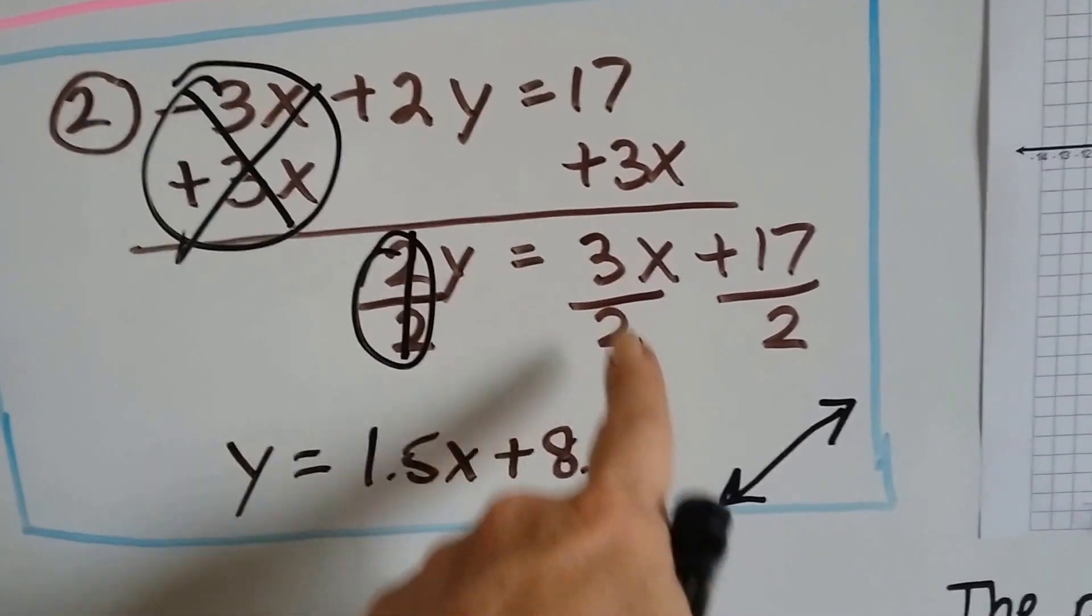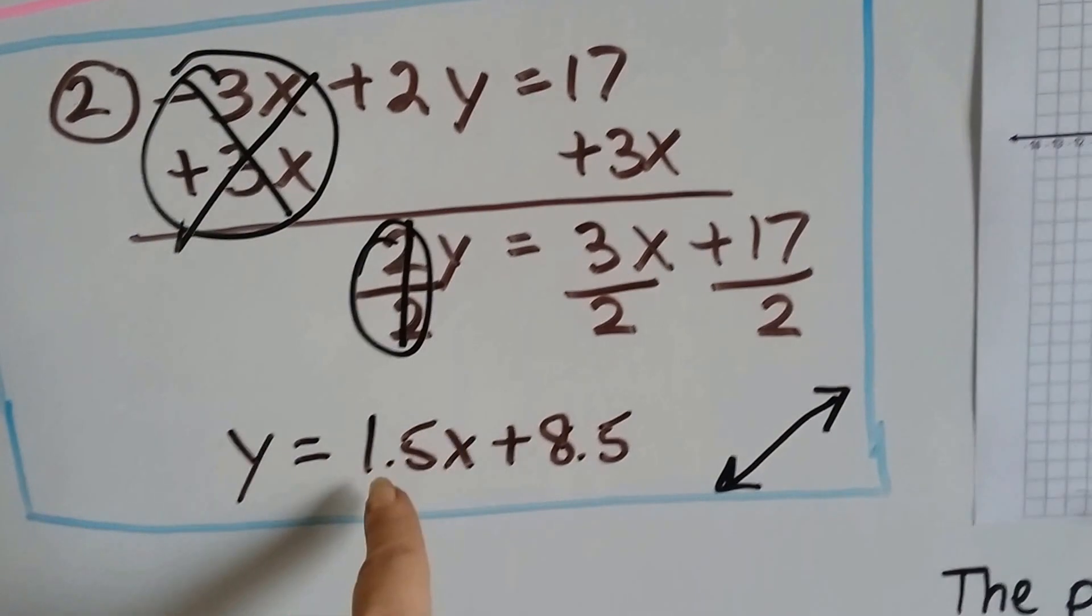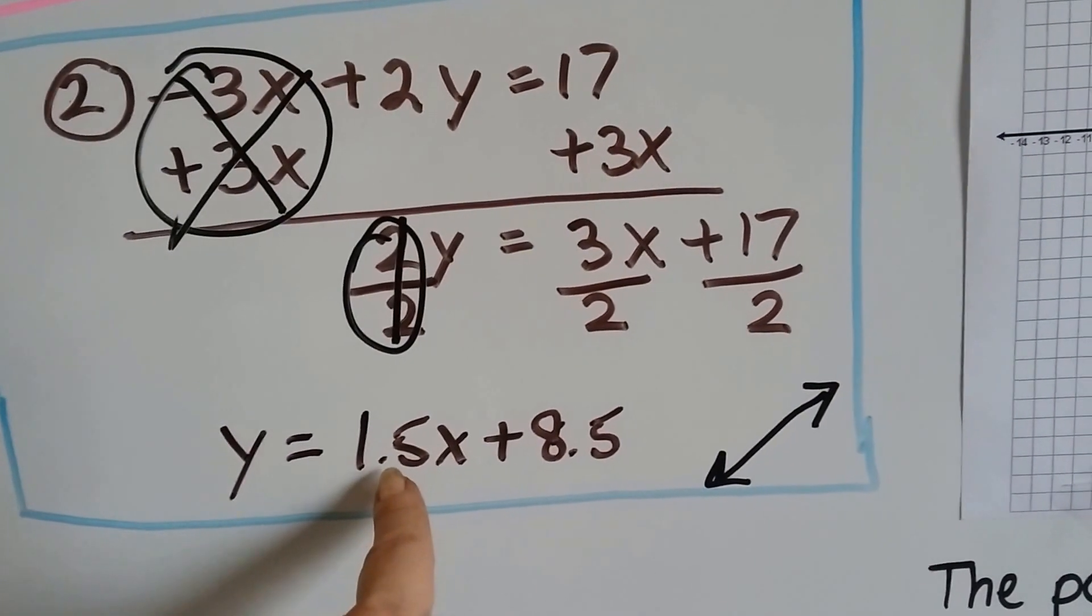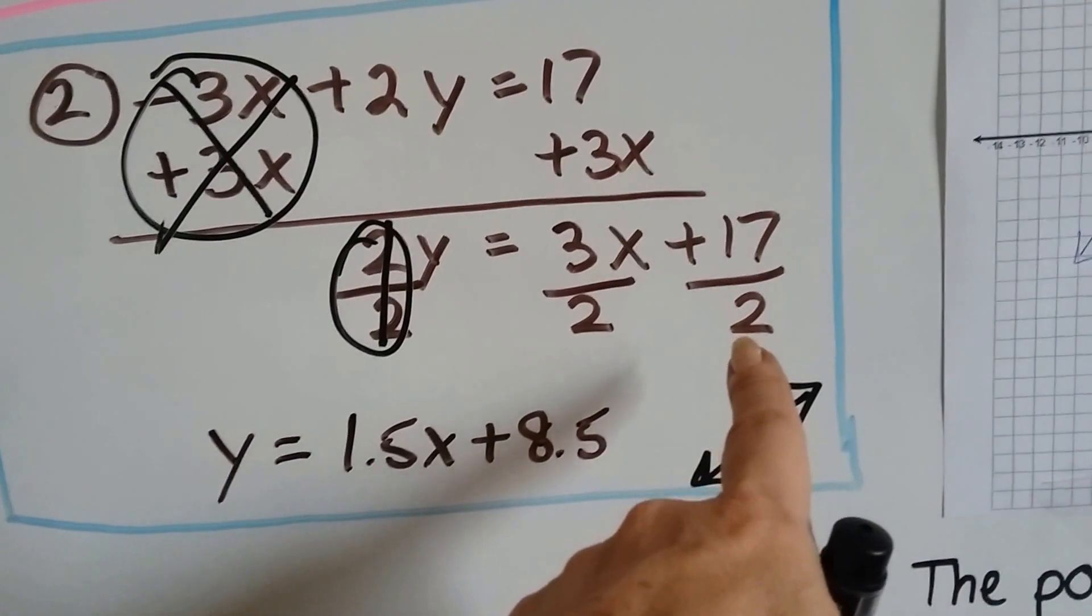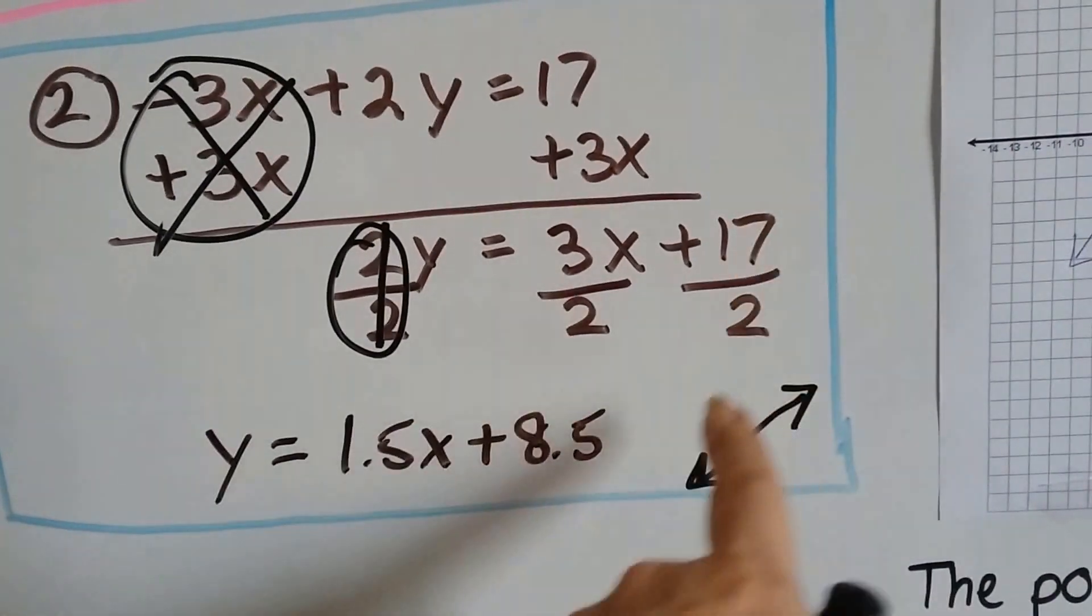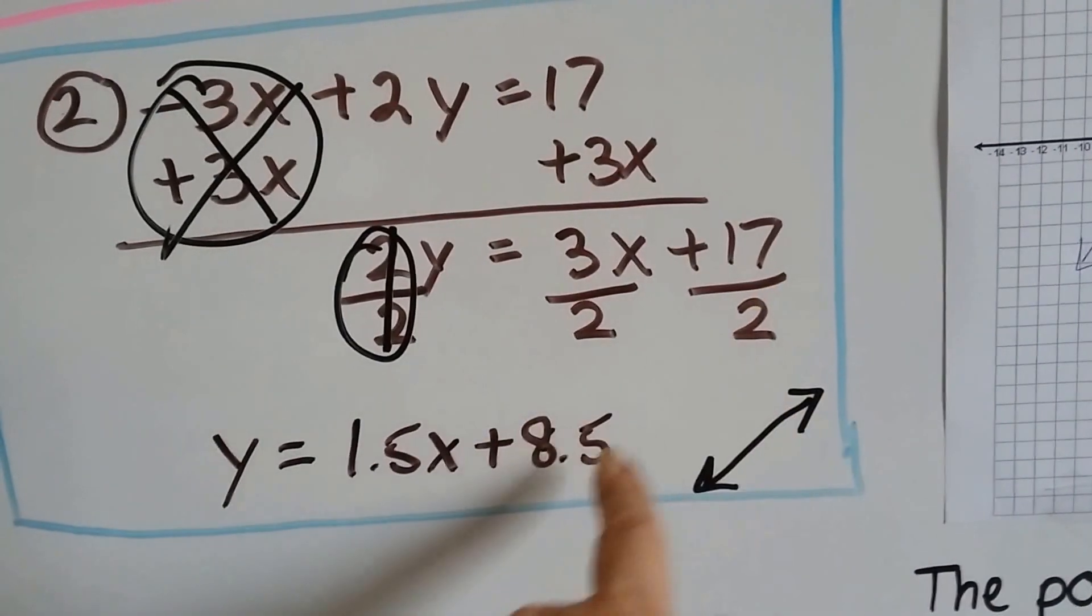This turned into our friend the invisible 1, so I got y by itself, but I got 3 over 2, that's 1 and a half, isn't it? I wrote it as a decimal as 1.5, so I have 1.5x, and 17 divided by 2, that's 8 and a half, that's 8.5, so I wrote that as a decimal.